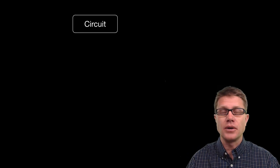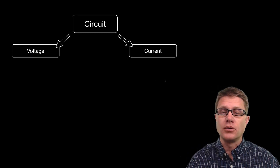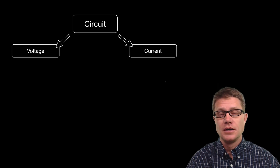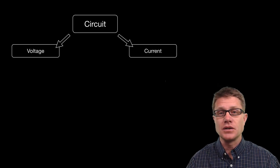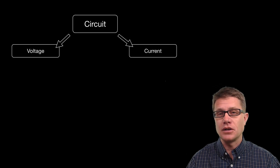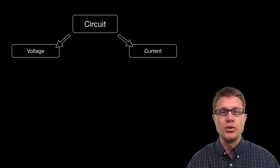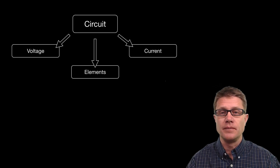To understand what's going on in a circuit, the two big things you should get are going to be the voltage and the current. The voltage is going to be the potential difference in different parts of that circuit. And then the current is going to be the flow — really the movement of electrons through the circuit.